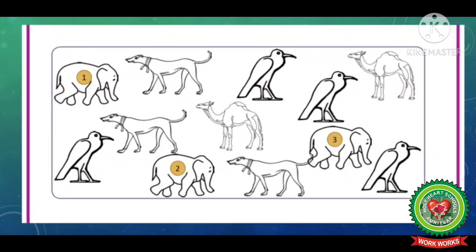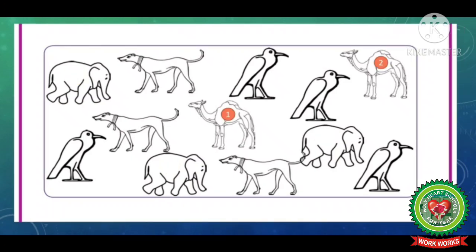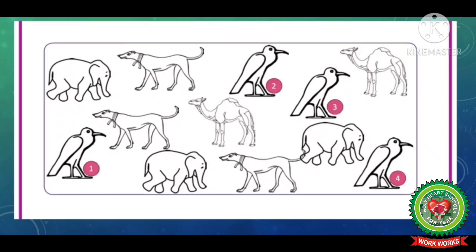Now let us count one by one. First of all, let us count the elephants. How many elephants are there? 1, 2, 3 — there are 3 elephants total in this picture. Now we will observe how many dogs are there? 1, 2, 3 — so there are 3 dogs in total. Now the remainings are birds. How many birds are there? 1, 2, 3, 4 — there are 4 birds.